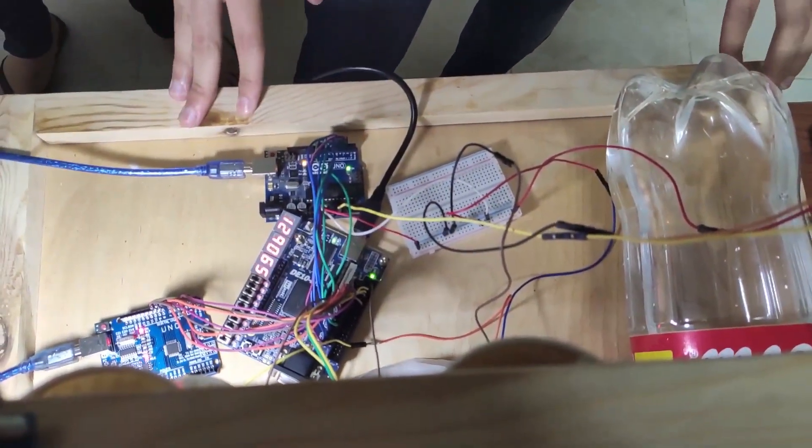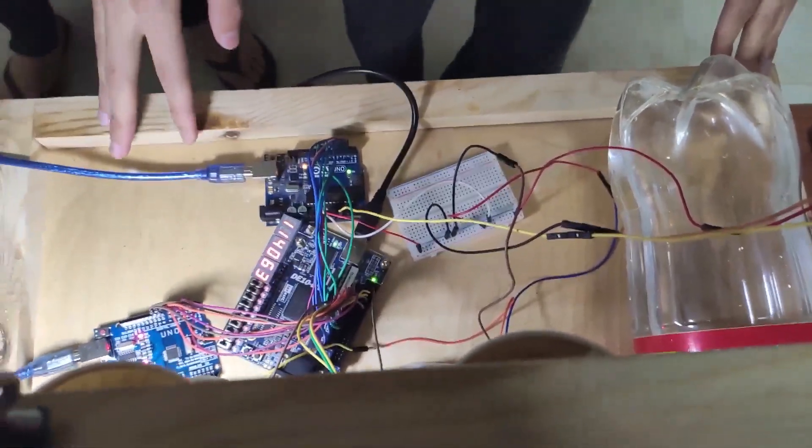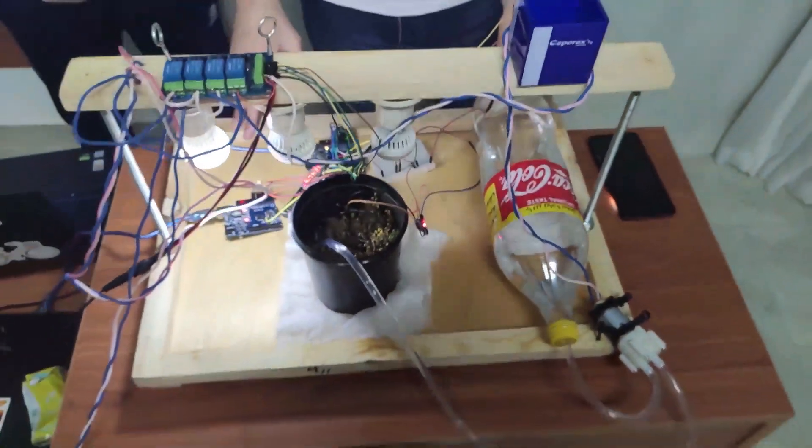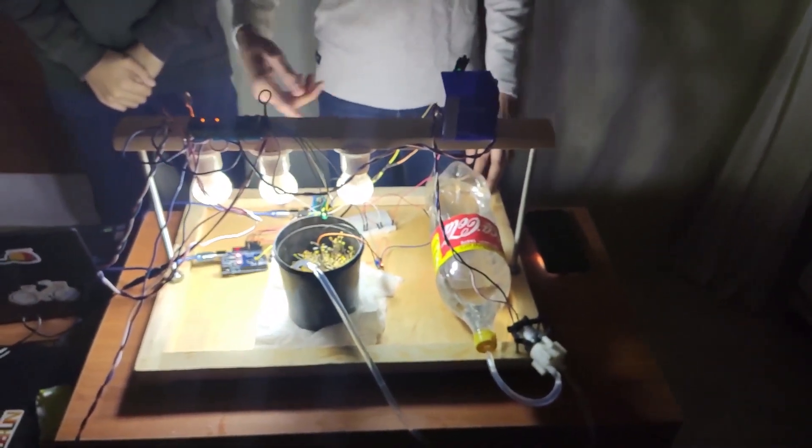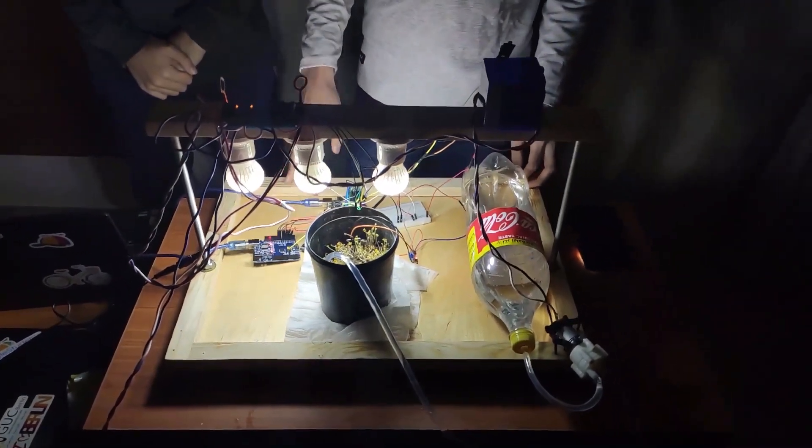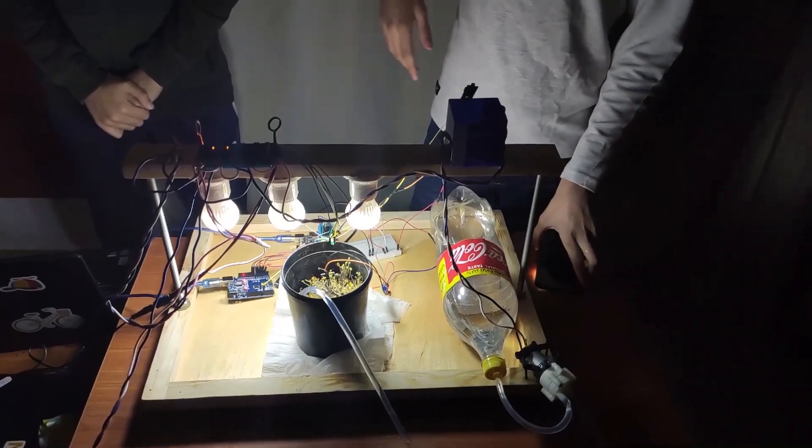Since we have tested the pump, now it's our turn to test the LDR and the lamps. We will turn off the light now and see what will happen. So now three lamps have turned on. That's because of the darkness inside the room.